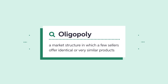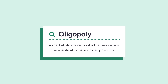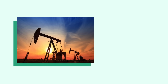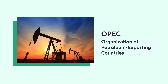An oligopoly is a market structure in which a few sellers offer identical or very similar products. Coordination among the sellers is advantageous but difficult to maintain. The case of OPEC is an excellent example. If all countries coordinate and restrict their oil supply,